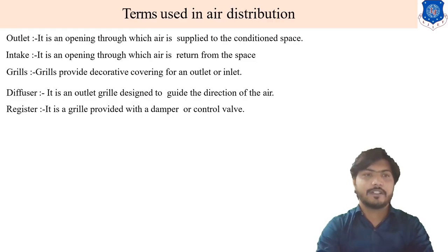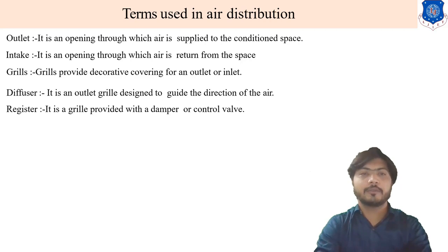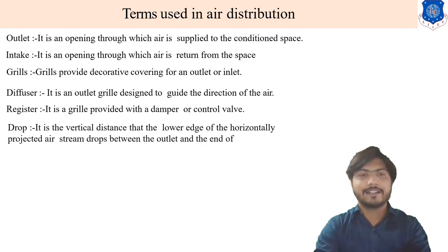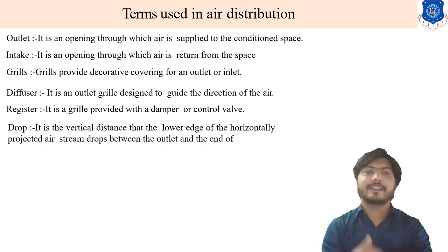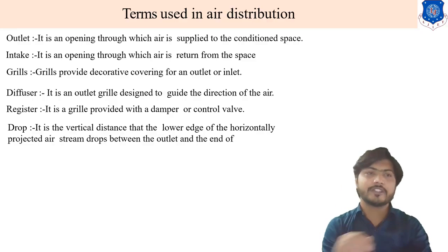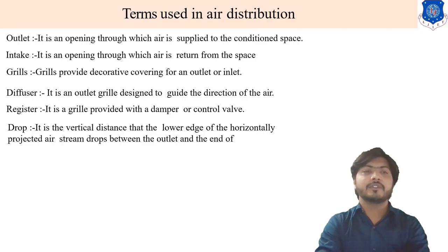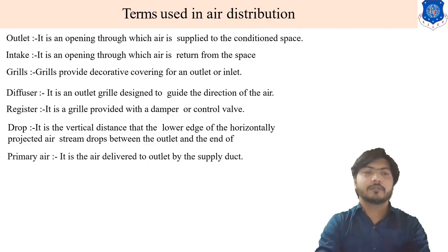What is the meaning of register? It is a grill provided with a damper or control volume. Next is drop. It is a vertical distance that the lower edges of the horizontally projected air stream drops between the outlet and the end of throw.